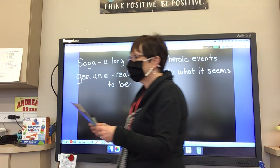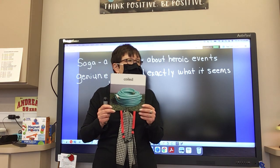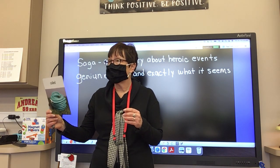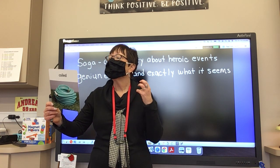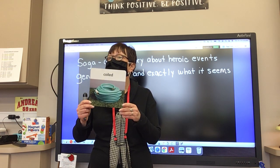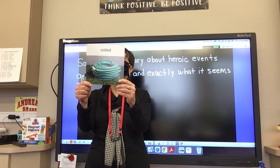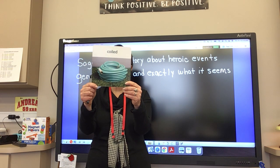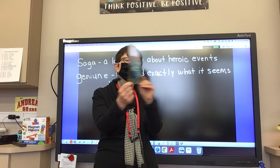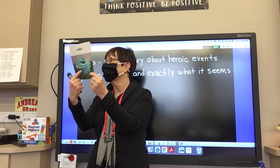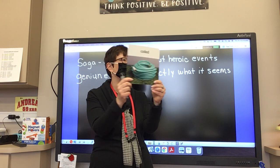Our next word is the word coiled. Everybody say coiled. Now coiled is a verb. Has anybody heard this word coiled? Coiled means you shape something into loops or rings. Here we can see that the hose is coiled. Clara coiled the hose after she was finished watering the plants. So coiled — here we could see the hose is coiled up. She did a really good job coiling up her hose.